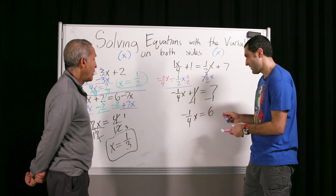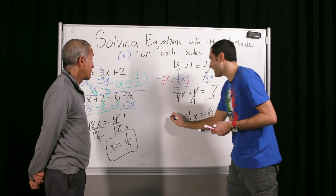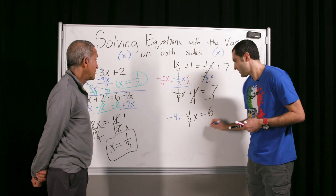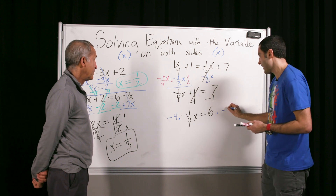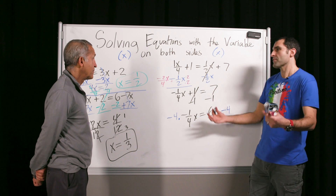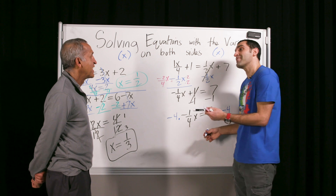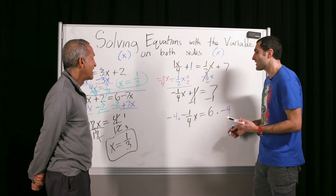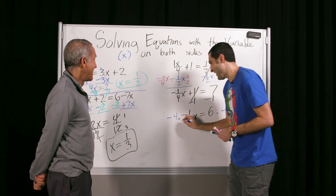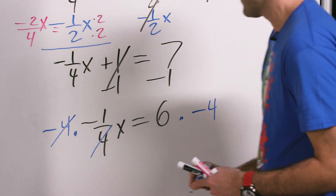Multiply both sides by negative four. Am I obligated to say over one? No. Like when you ask for coffee and they say four dollars — they wouldn't say four over one, even though it's the same. The technical response would be: please simplify your answer and reduce your price. So these go and the negatives cancel.